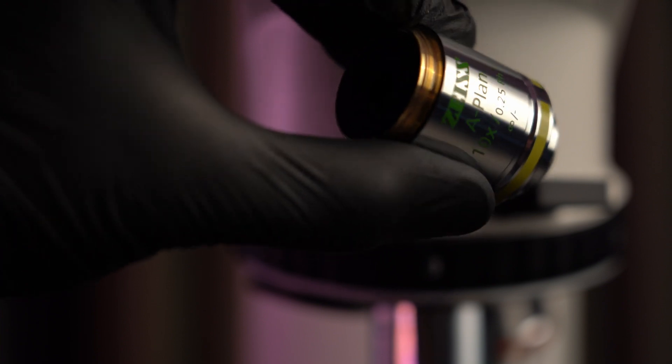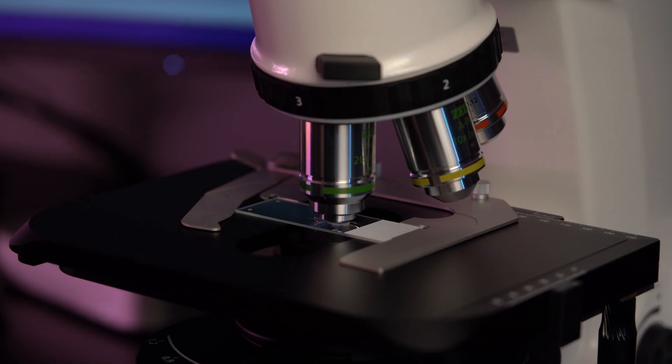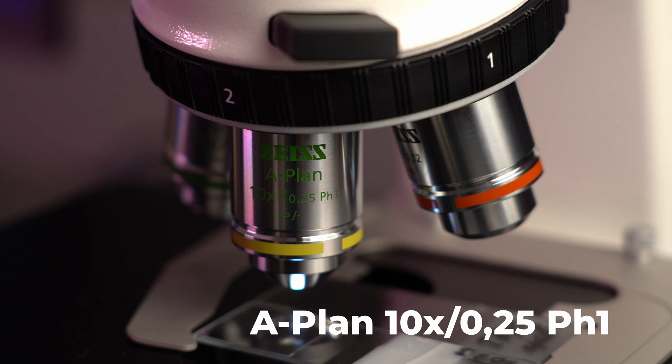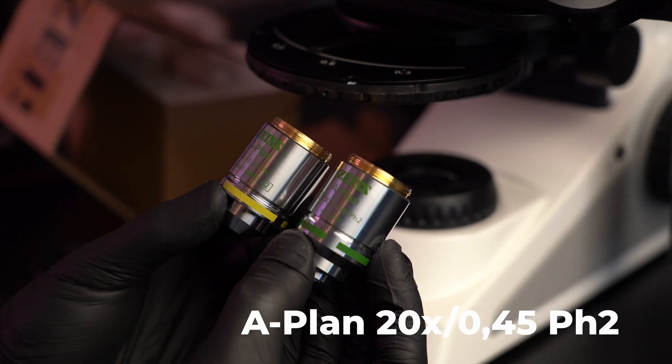By the way, almost all phase objectives have green markings. The phase ring number is also indicated. Here we have 10x magnification lens with a PH1 mark and 20x lens for the second phase ring PH2.